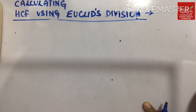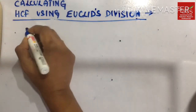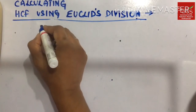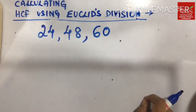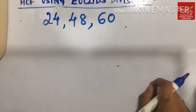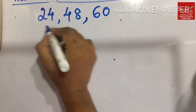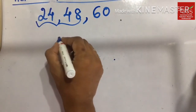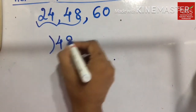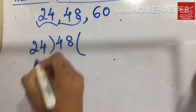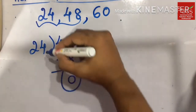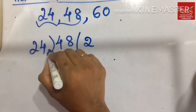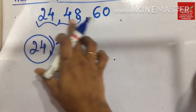Now let us see if we can use the same Euclid's division method if we have three numbers, or even more than three numbers. Let our numbers be 24, 48, and 60. Now how should we start? Pick any two numbers of your choice. I would like to choose 24 and 48 and use the division method. 48 would be my dividend and 24 is my divisor, and we know that 24 times 2 is 48, which is exactly divisible. So the HCF of 24 and 48 is 24.